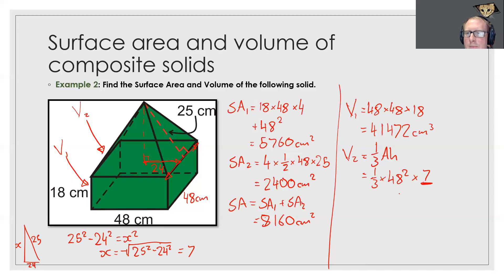So now that we have that we can go ahead and put that in our calculator. And I get 5,376 centimeters cubed. To find that total volume we just add these together, volume 1 plus volume 2.